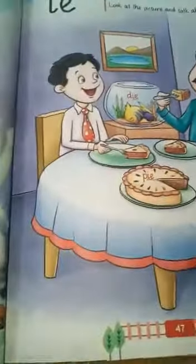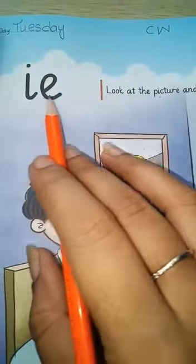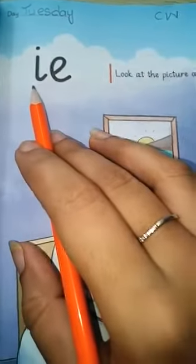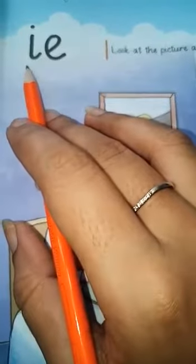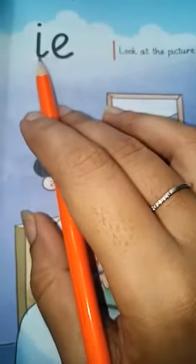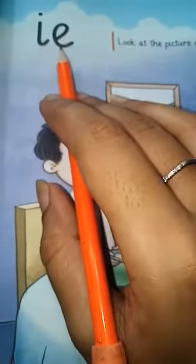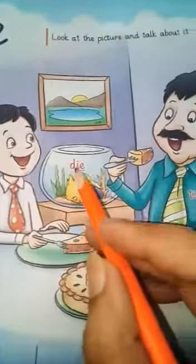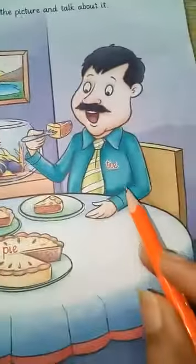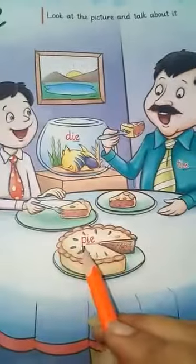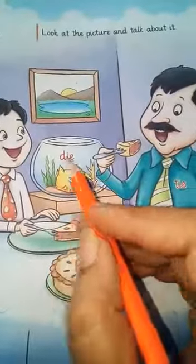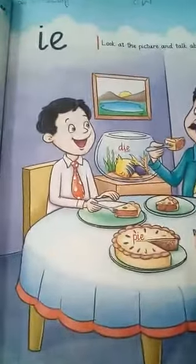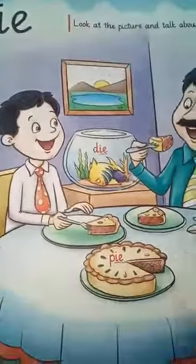So today what did we learn? We learned IE words. When two letters are joined together, they make a new sound. When E and I are joined together, they make an I sound. The IE words are: pie, die, tie. Learn the IE words at home. Thank you.